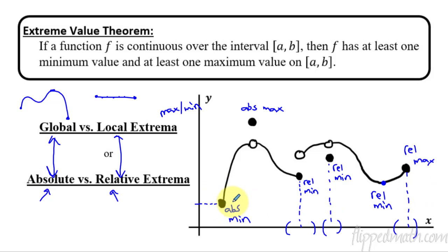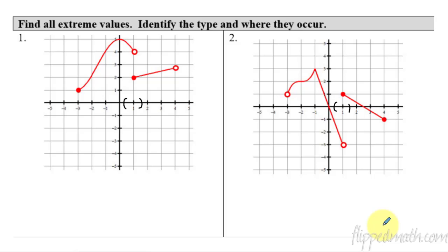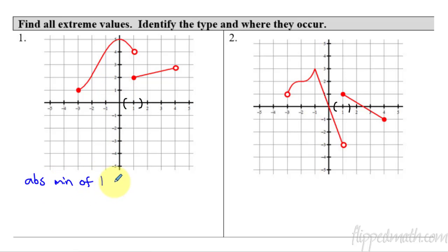So here's how we label this graph and identify all the different types of extrema. Starting on the left and working our way over: this point here—is it lower than any other points? Yes. So we write this as absolute minimum of 1 at x equals negative 3. The value of the minimum is the y value of 1, and the location is x equals negative 3.